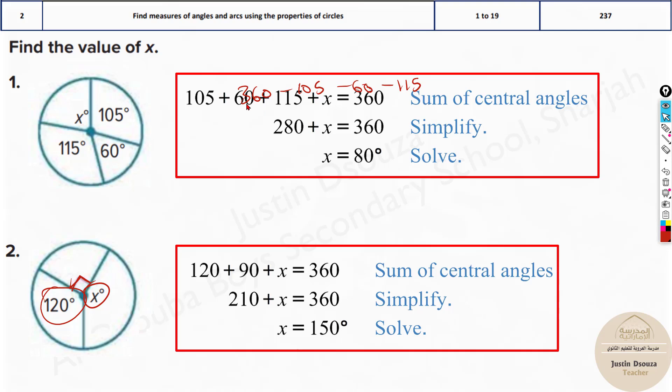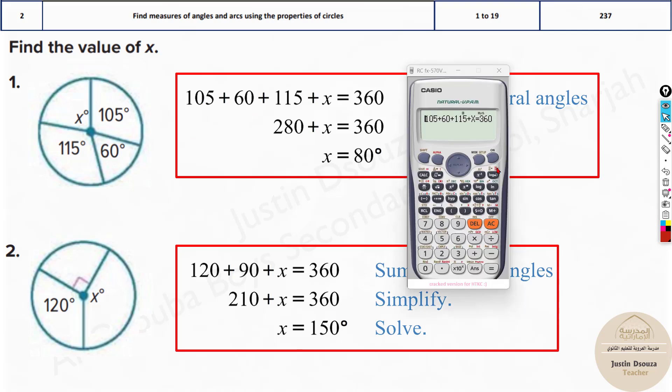You can see here the sum of central angles means adding all the angles equals 360. What I did was I've just taken this directly to the other side. Also you can type this equation out directly in the calculator.